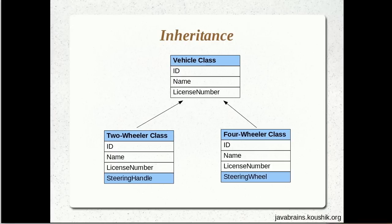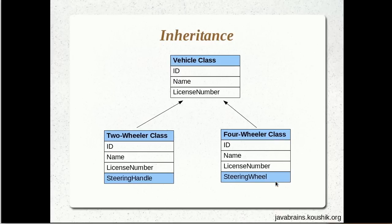To understand the need for mapping inheritance, let's take this example. I have an abstract vehicle class with id, name, and license number. I have two classes that extend this — a two-wheeler class and a four-wheeler class. The two-wheeler has a steering handle property and the four-wheeler has a steering wheel. I'll have objects of either the two-wheeler or four-wheeler and I'll want to persist them both. One option is to mark these two classes as entities with separate tables.